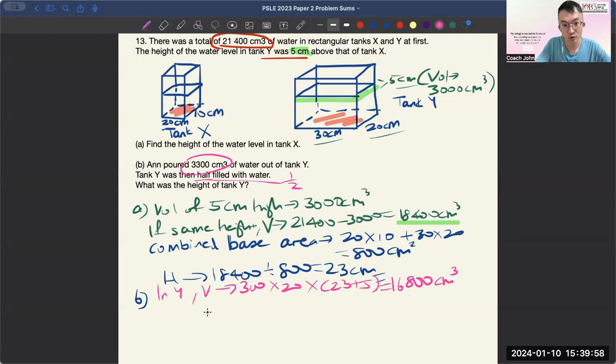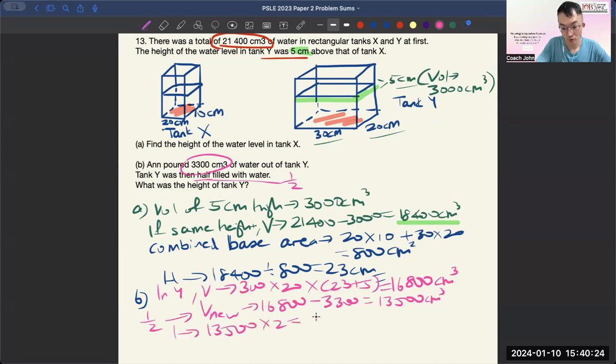And by filling the change, now the new volume, when you pour out, is going to be 13,500 cm cubed. And this is actually half of the tank. So, since it's half of the tank, the one whole or 2 over 2 will be 13,500 times 2, which is equal to 27,000.